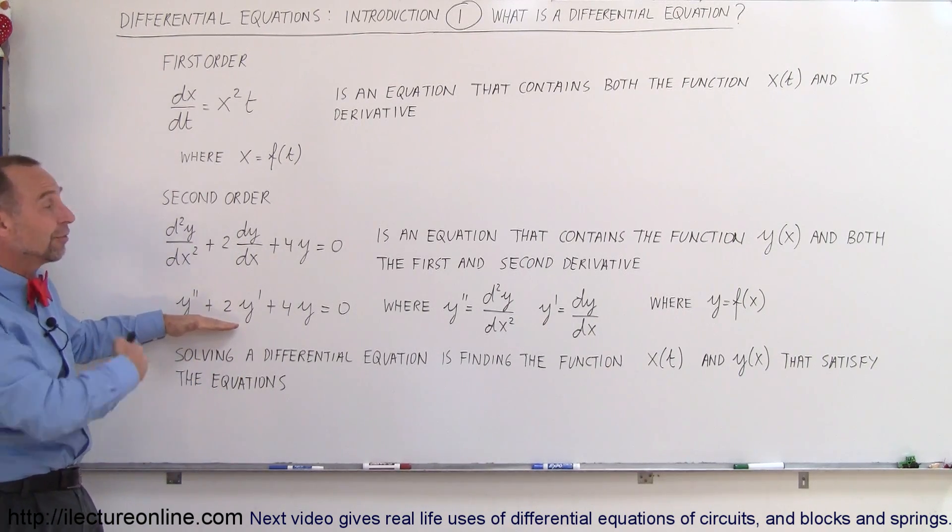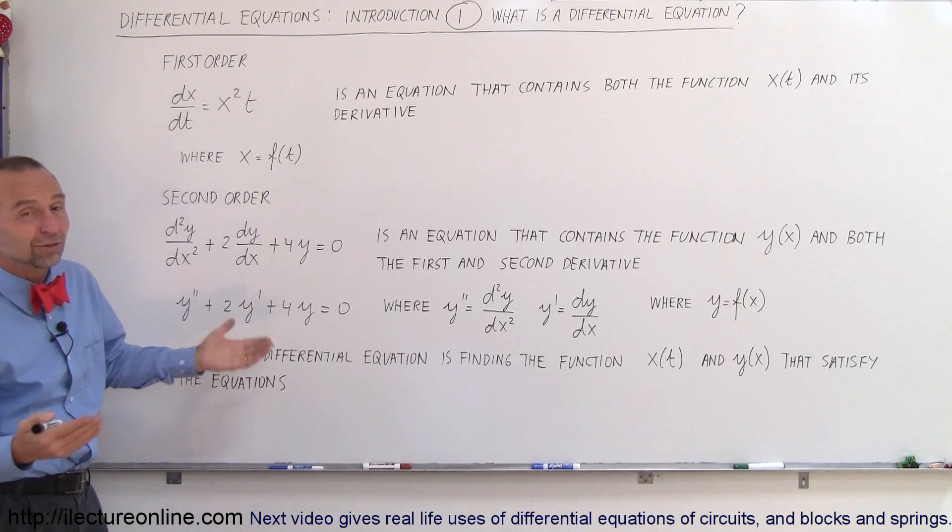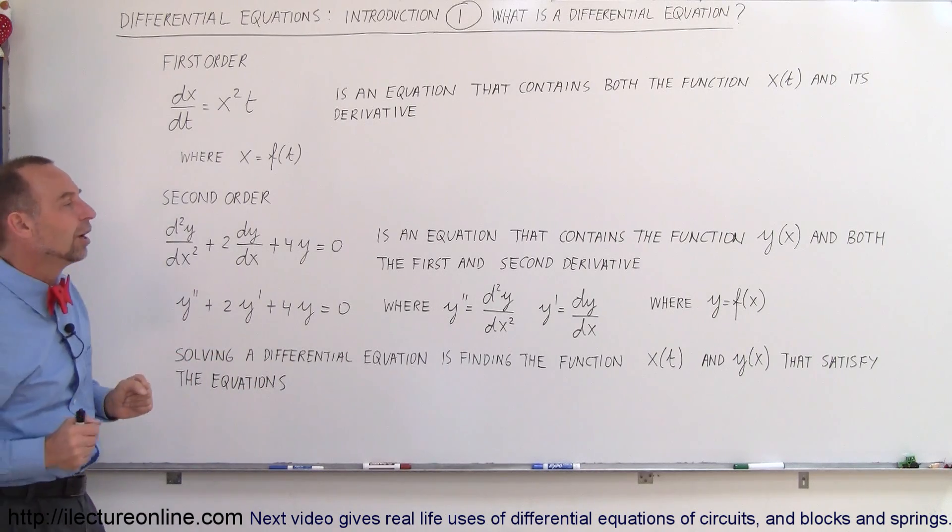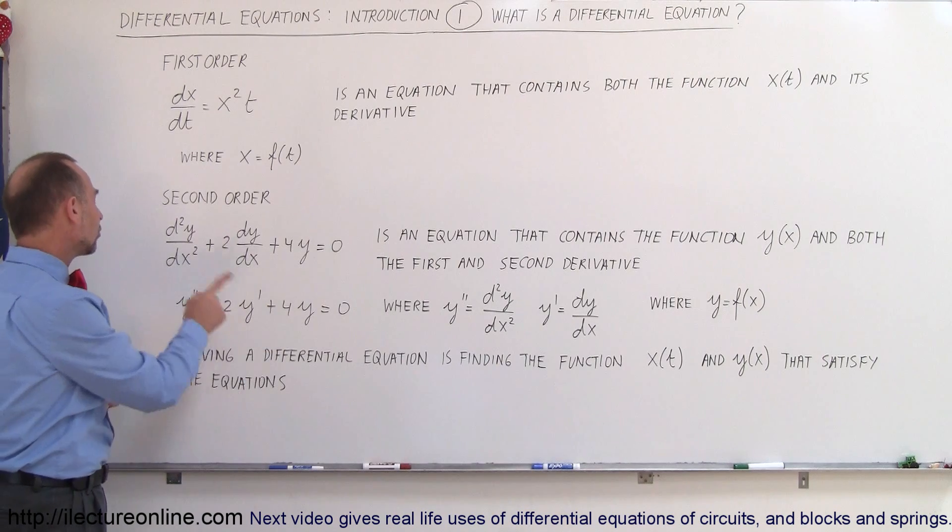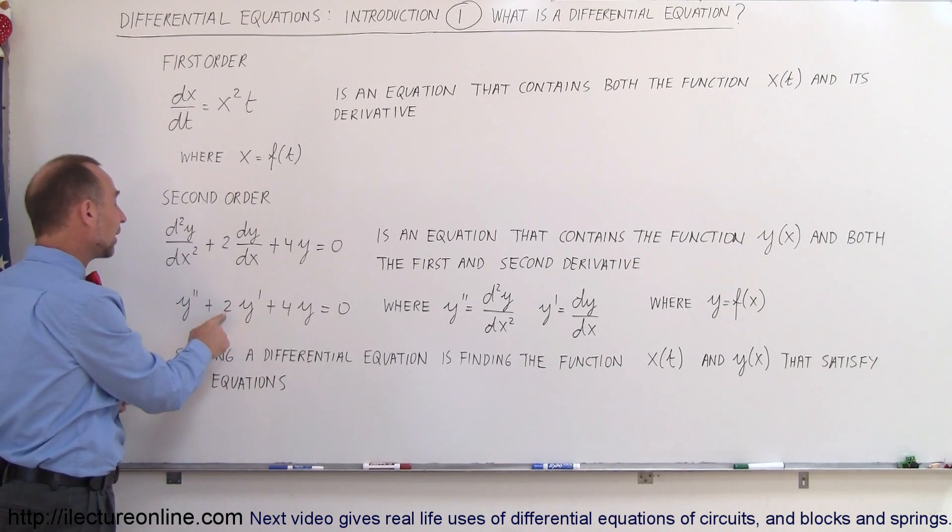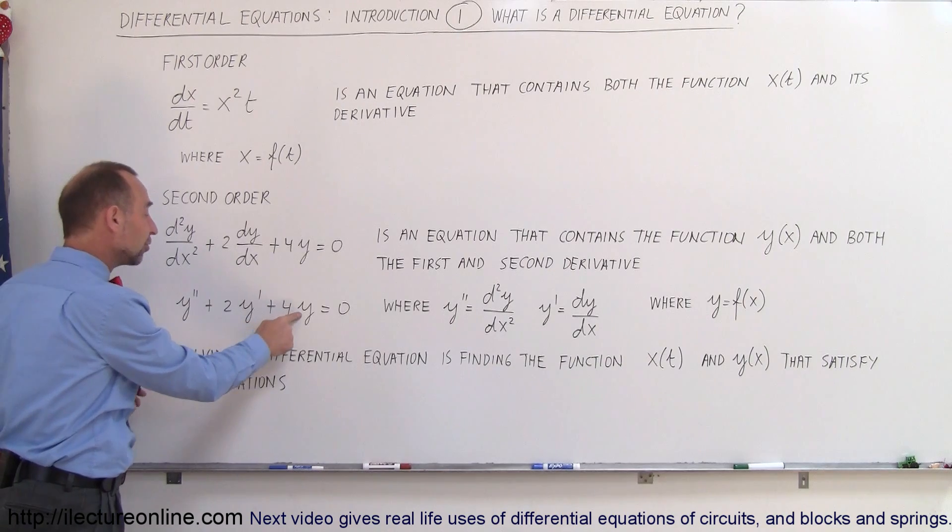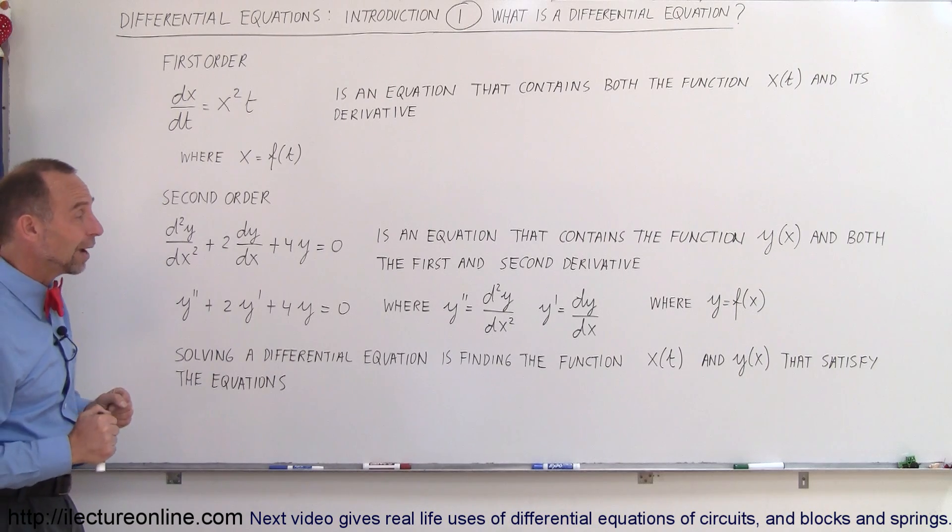Here again y is some function of x. Again it could be x squared plus 3 or x squared minus 5x plus 5 or something like that. It's a function of x and so therefore we're trying to find the function such that when you take the derivative, the second derivative, plus the first derivative multiplied times 2 plus 4 times the function itself, that should add up to 0. As you can see it's a little bit more challenging that way.